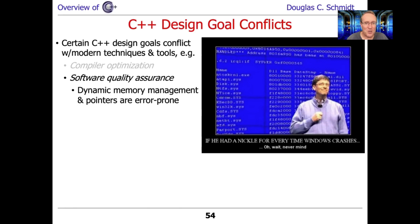This is why there's a C++ guideline that says: don't use new and delete explicitly. Instead, encapsulate those things behind factory methods like make_unique and holder classes like unique_ptr, vectors, and other types of containers. Just be aware that if you find yourself compelled to write code with naked or raw pointers, you're just asking for trouble.